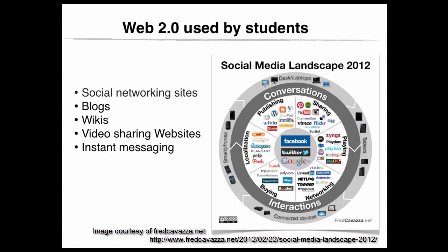Mashups are websites that aggregate and reuse data coming from different sources, combining individual content to result in a blended document. Portals are old versions of mashups. Folksonomies, also known as collaborative tagging, social classification, social indexing, and social tagging, is a collaborative classification system used to annotate and categorize digital content. Examples of tagging systems are Delicious, which is a social bookmarking site, and Flickr, a photo publishing and sharing site.